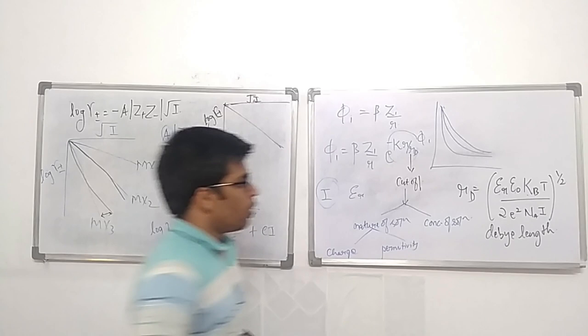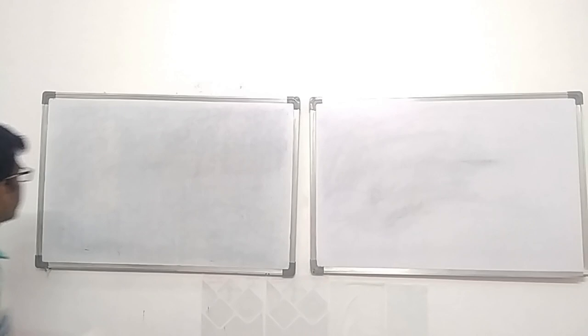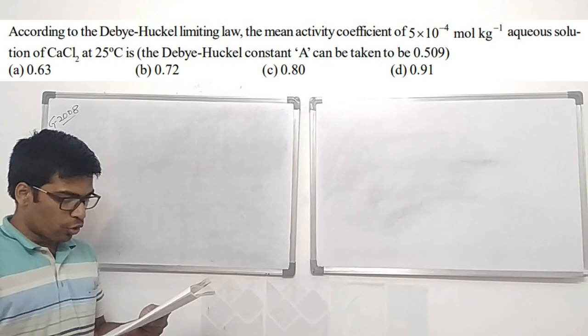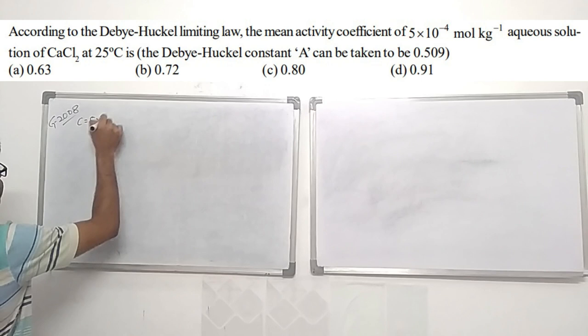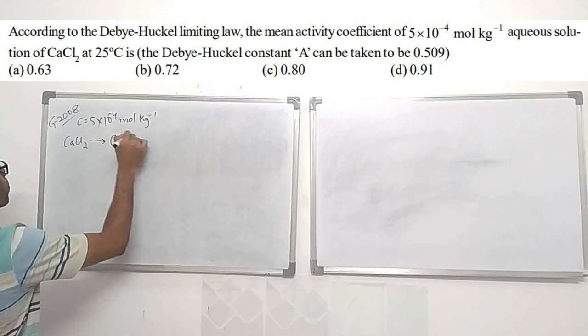Now we will look at questions from GATE and NET on these three topics. The first question is from GATE 2008. According to the Debye-Hückel limiting law, find the mean activity coefficient of a CaCl₂ solution at concentration 5×10⁻⁴ mol/kg.